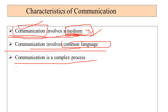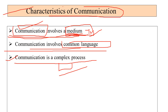Communication is a complex process. Why? Because there are different meanings of words. One culture may have a different meaning for a word, and another culture has a different meaning. So I hope you are now very clear with the characteristics of communication.